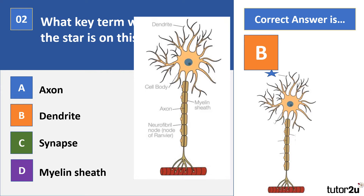The correct answer is the dendrite. We've also got some other missing terms on there: we've got the cell body of the neuron, the synapse — which is part of synaptic transmission, so we wouldn't actually see the synapse unless that neuron was connecting with another neuron — and the myelin sheath. There are three different types of neuron you're required to know: the sensory neuron, the motor neuron, and the relay neuron. You're expected to know their functions, structure, and be able to describe the differences between them.